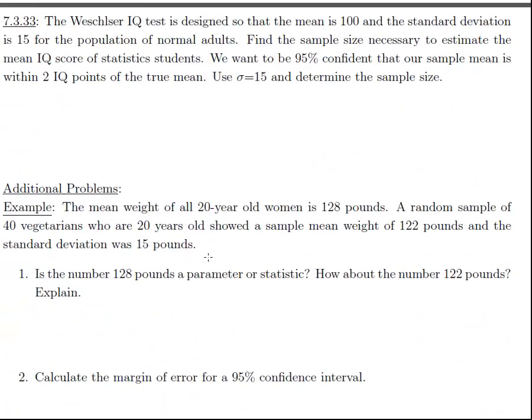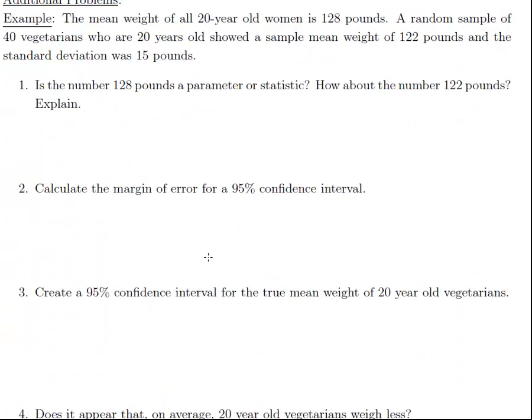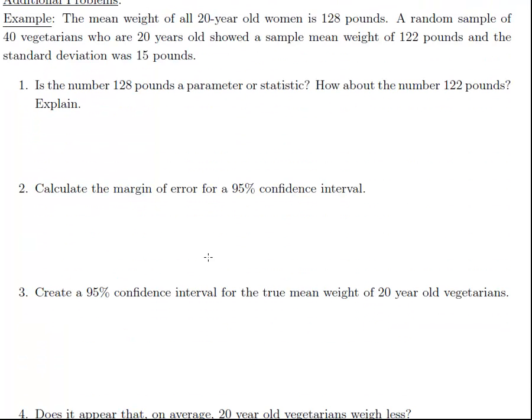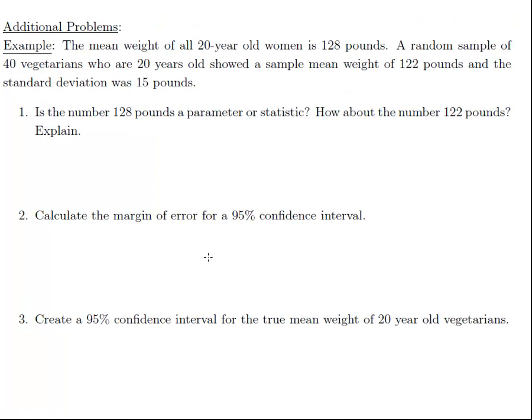We're going to skip sample size for now, and let's go do one other problem. Let's do this additional problem on page 63. This is going over weight, which is quantitative. The weight of all 20-year-old women is 128 pounds. A sample of 40 vegetarians had a sample weight of 122, so x-bar equals 122.